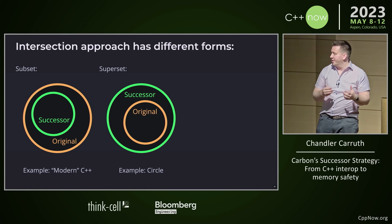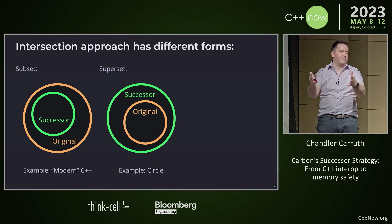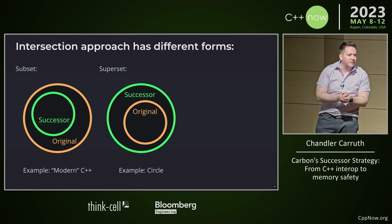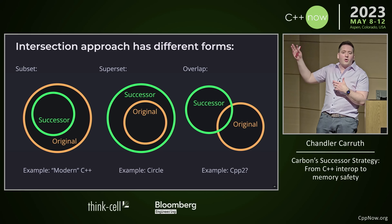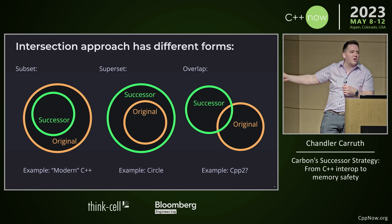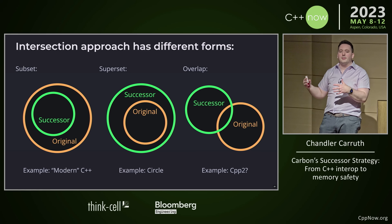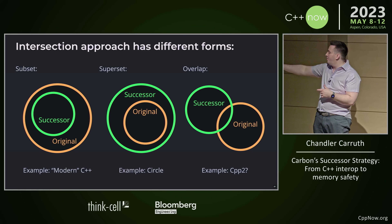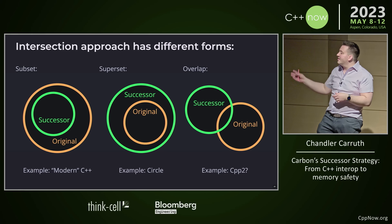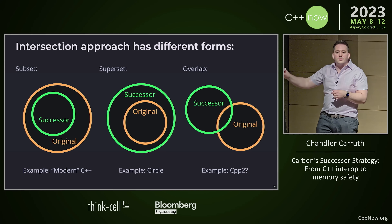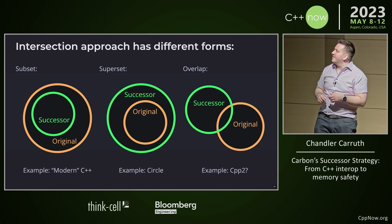You can also imagine a superset approach. There are a lot of examples where the successor kind of encompasses the original and then goes beyond it. Certainly C++ and C follow this approach. I feel like Circle is also following this approach. You don't even have to be in one of these rigid categories — you could also have some kind of arbitrary overlap. Moving back and forth here is pretty fluid. The interesting distinction is between intersection and interop approaches.